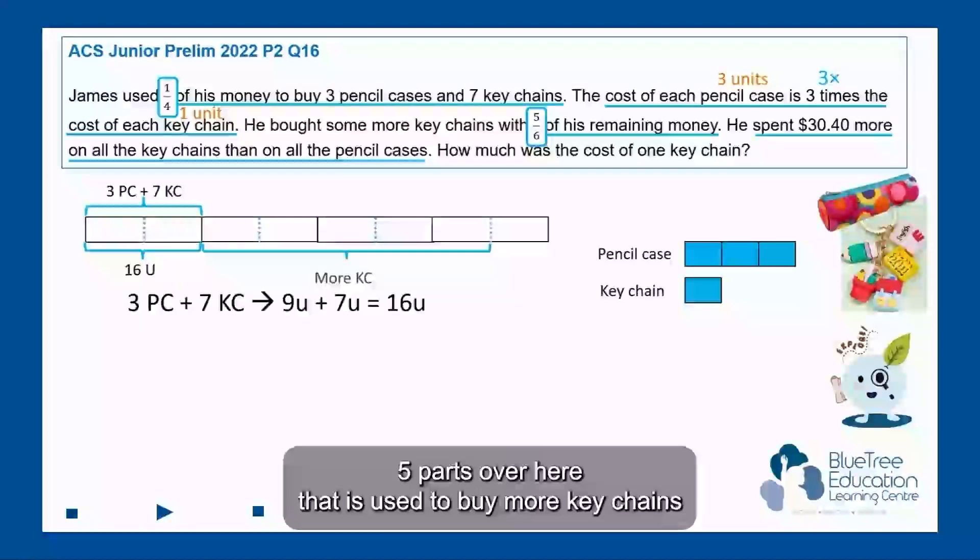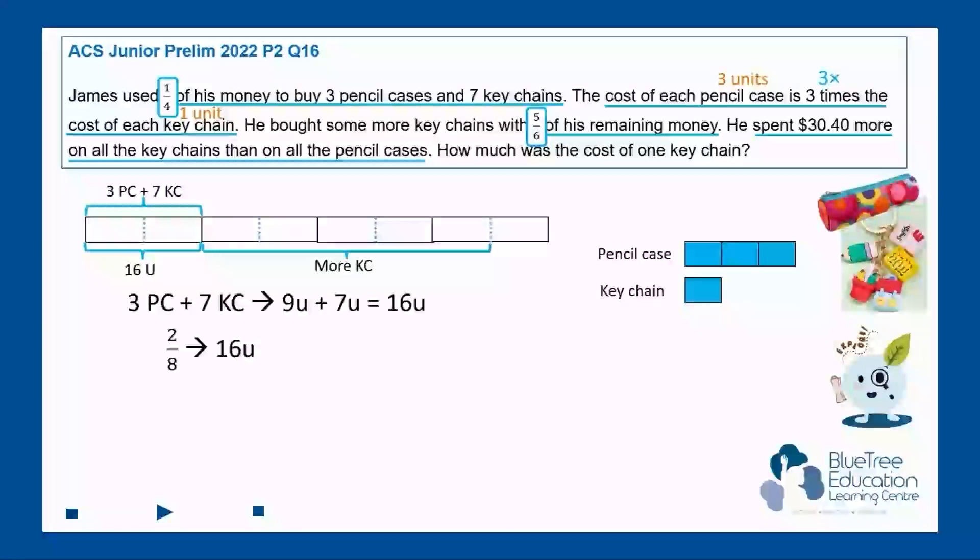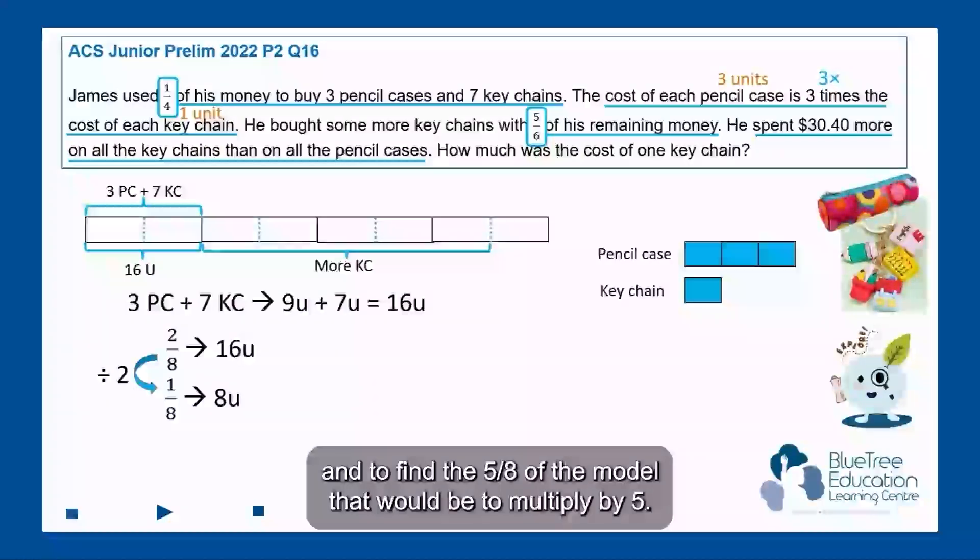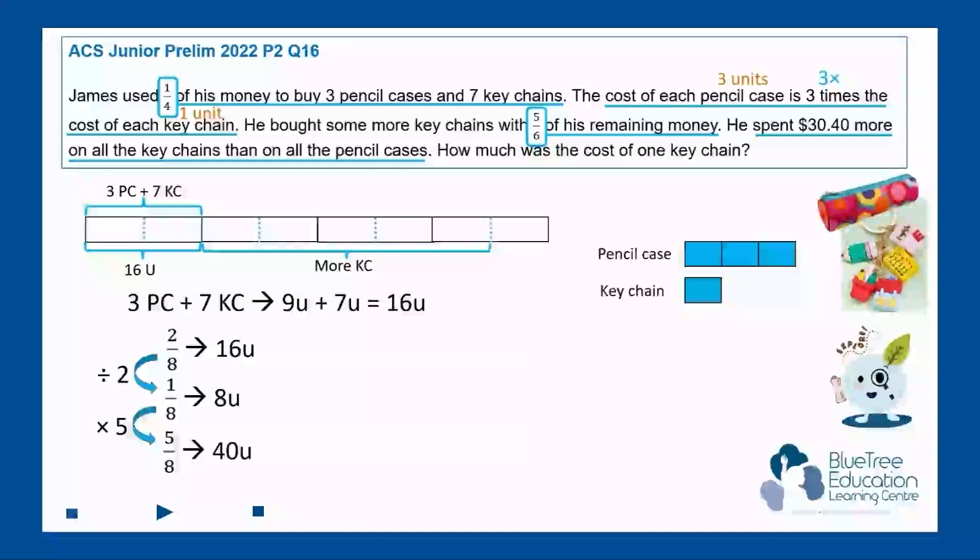And from the model you can observe that 2/8 represents 16 units. So to find 1/8 we will divide that by 2 to give us 1/8 which is 8 units, and to find the 5/8 of the model that would be to multiply by 5, that will give us 5/8 which represents 40 units.